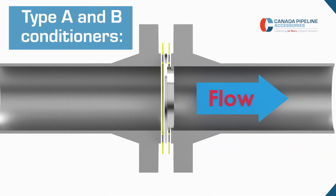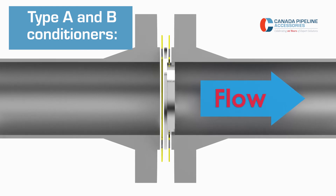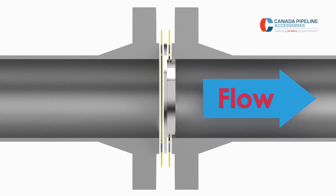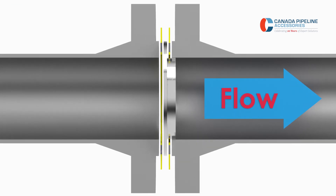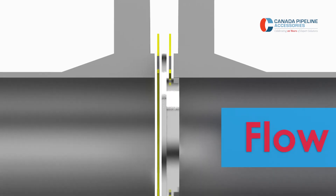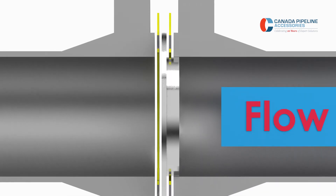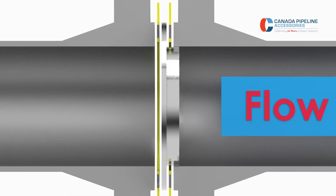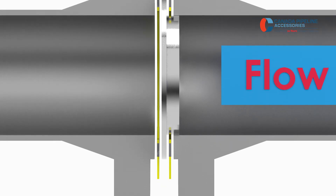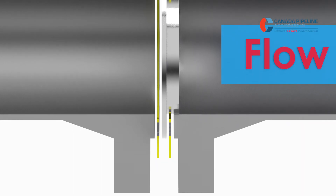For type A and B flow conditioners, the CPA will be sandwiched between two gaskets in the flange. CPA recommends spiral wound gaskets with inner and outer rings. The outer ring helps center the gasket in the flange itself to reduce the chances of the gasket sliding in front of the flow conditioner, which can cause a measurement error.